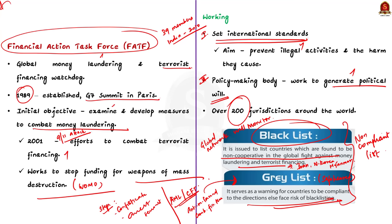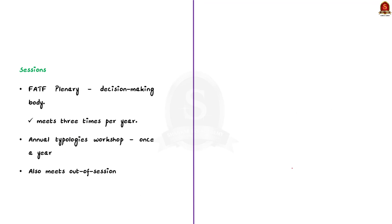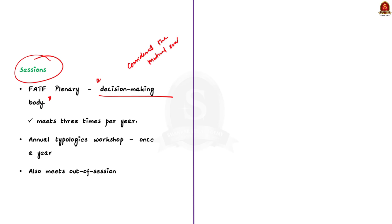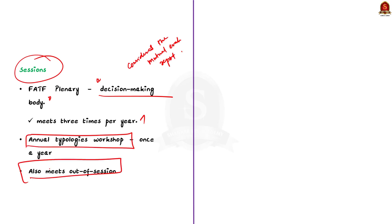This is all about FATF's basics and its gray and black lists. The FATF plenary is the decision-making body of FATF. During plenary sessions, it considers mutual evaluation reports, policy, and governance matters. It usually meets three times per year, plus once a year at an annual typologies workshop. FATF also meets out of session for various purposes including private sector consultation. We saw the basics of FATF, the two lists maintained, and the plenary sessions. With these learned points, let us conclude and take up the next news article.